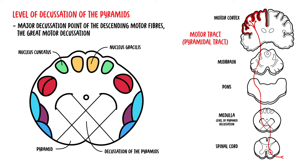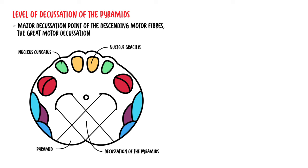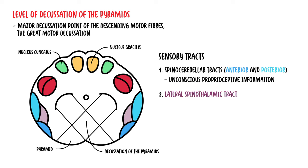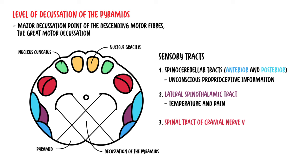Decussation essentially means when the motor nerve fibers travel and move from one side to the other — for example, from the left to the right, or from the right to the left. Within this level you can also find sensory tracts such as the spinal cerebellar tract, which carries unconscious proprioceptive information, the lateral spinothalamic tract, which carries information about temperature and pain, and the spinal tract for cranial nerve five.